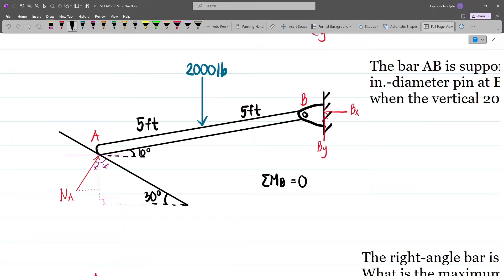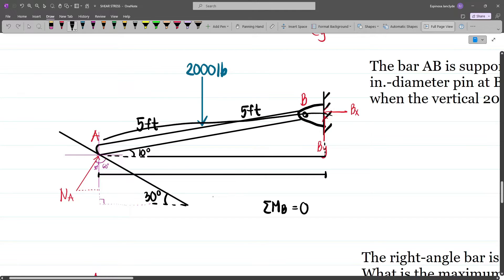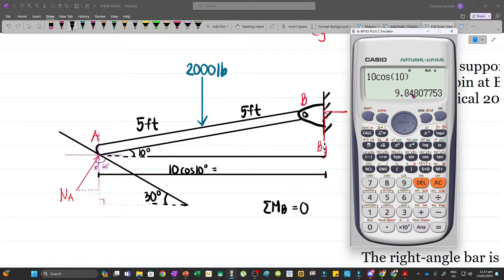Now first, let's define our distances. Let's extend this line and then draw a broken line here. This distance is 10 cosine of 10 because notice that this is also a right triangle. And then our hypotenuse is 10. So this is 10 cosine of 10 degrees which is approximately 9.85.